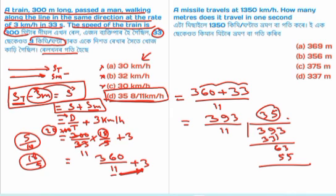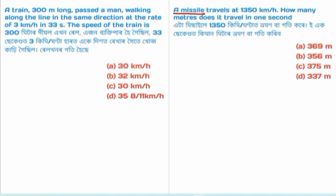A missile travels at a speed of 1350 km per hour. How many meters does it travel in one second? We need to find the distance in meters covered in 1 second.